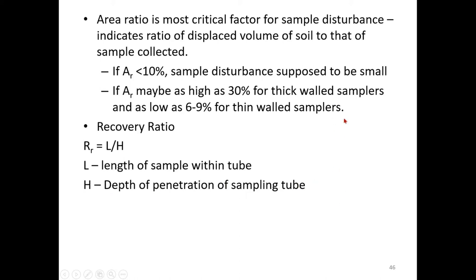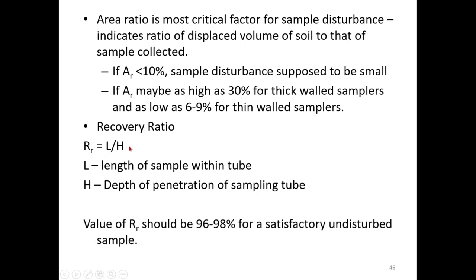Next is the recovery ratio (RR), generally used for rock core samples. RR = L/H, where L is the length of sample within the tube and H is the depth of penetration of the sampling tube. For example, if you penetrate 0.5 meters but only collect 0.4 meters of sample, RR = 0.4/0.5. For a satisfactory undisturbed sample, the value of RR should be 96 to 98%.